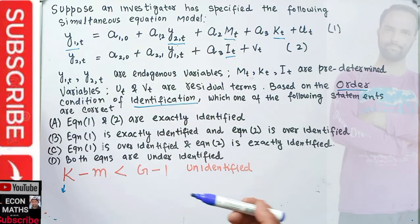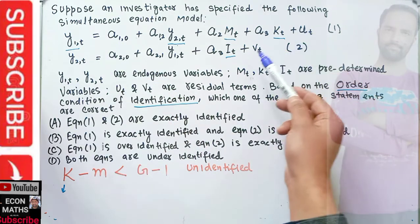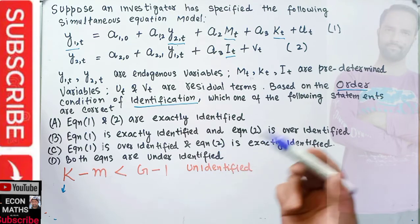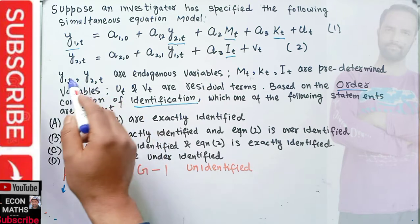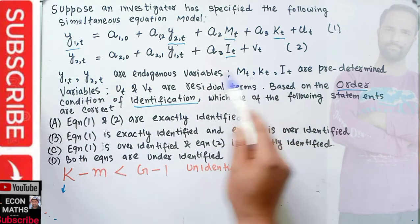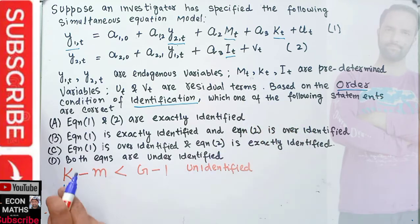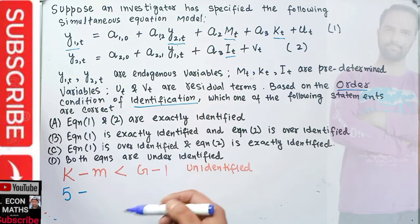Note that the constant terms like α10 are not endogenous or exogenous variables, and ut, vt are residual terms — not counted either. So with two endogenous variables and three exogenous variables, we have k = 5 total variables in our model. And m denotes the number of variables in a particular equation.